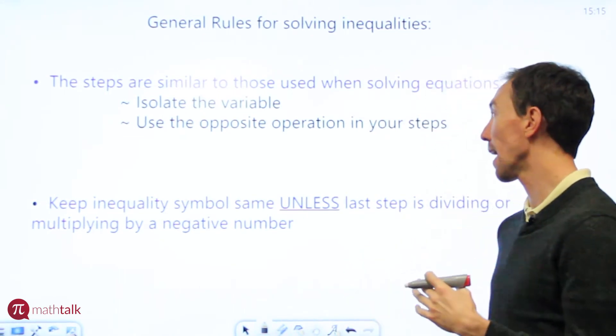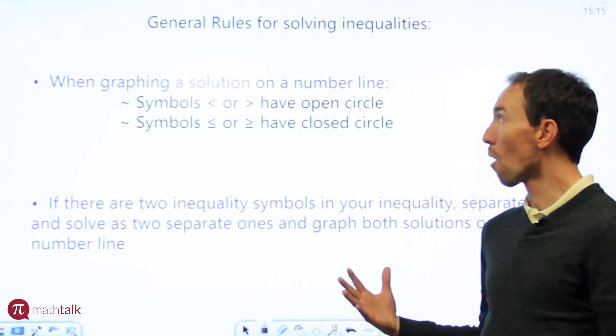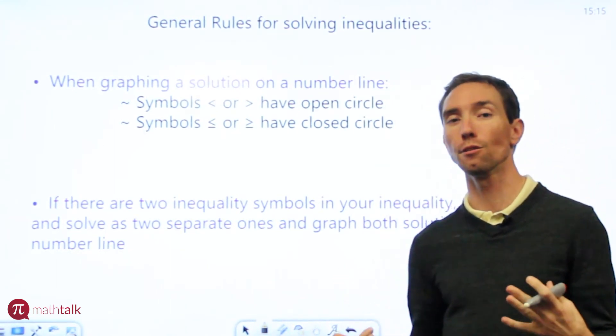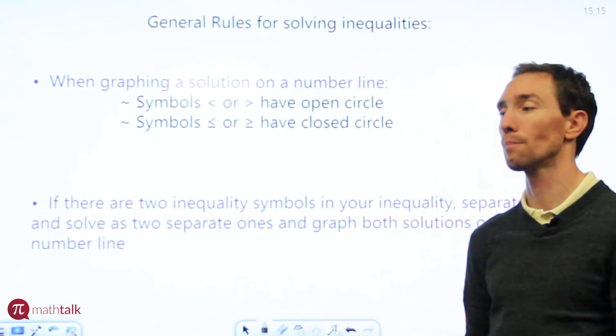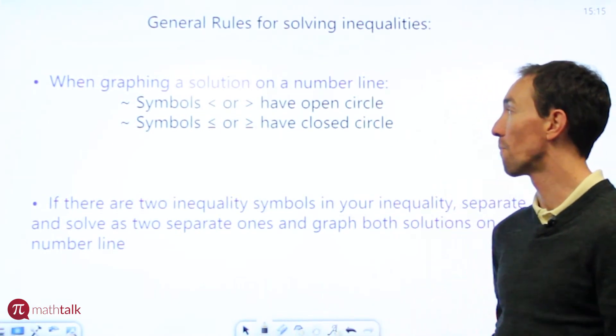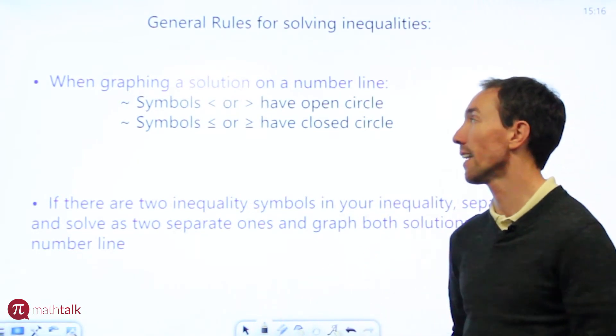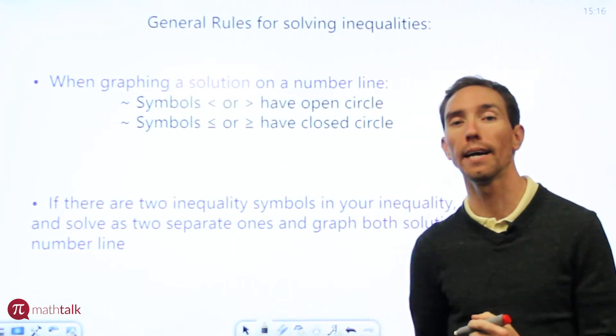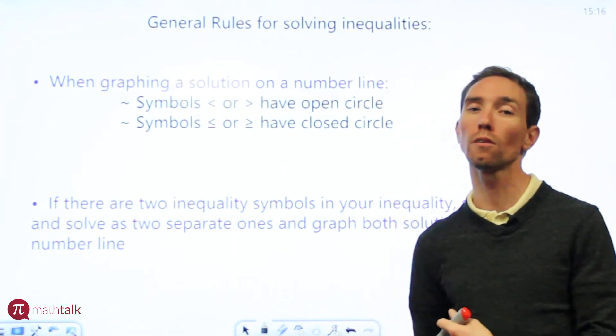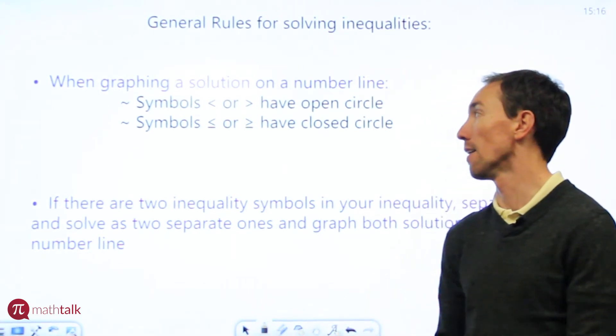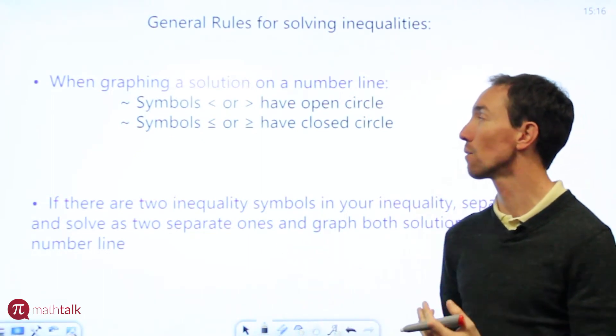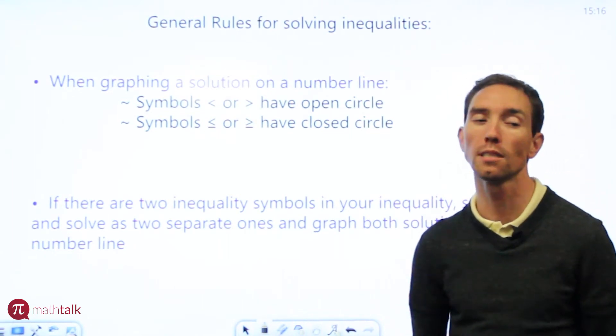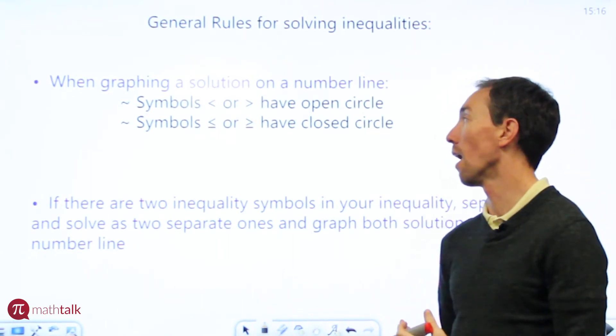So knowing that I think there's a couple more I want to share with you. When you're graphing your solution on a number line, because with inequalities you can actually graph it on a number line as opposed to just getting a number as an answer. If your inequality has a less than or a greater than symbol, then your graph on the number line actually has an open circle over the number. If your symbol is a less than or equal to sign or greater than or equal to symbol, then you're going to have a closed symbol over the number when you graph it.